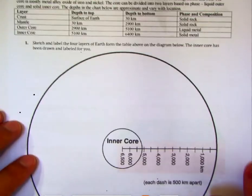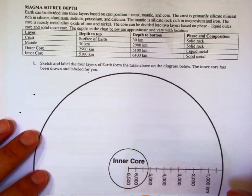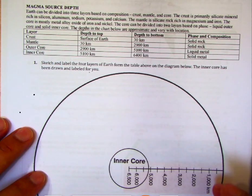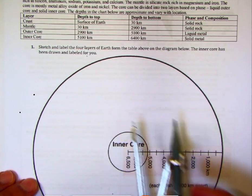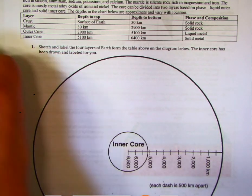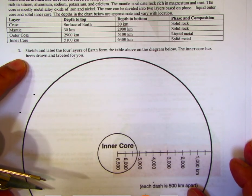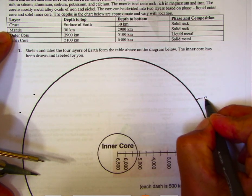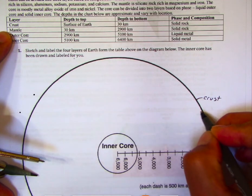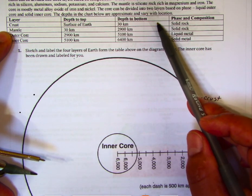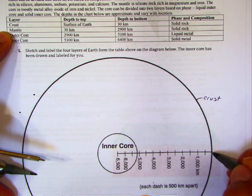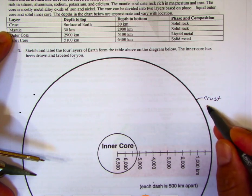For this next part on magma and magma source steps, you're going to draw to scale the depth of Earth's layers. If you have a compass, use it to draw circles. Label the four layers of Earth. Keep in mind that the uppermost layer representing the crust is going to be very thin — the crust is about 30 kilometers, but on this model it's more like 50 kilometers, so we'll just label that as the crust.